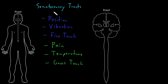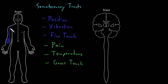Somatosensory information from most of the body is going to travel back to the central nervous system through nerves in the peripheral nervous system, and then spinal nerves that will enter the spinal cord. For example, in this category, let's say we have a receptor that carries some position sense information — a receptor in the arm — and that information is going to travel in nerves of the peripheral nervous system and then spinal nerves to enter the spinal cord.